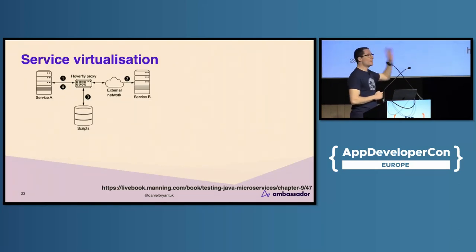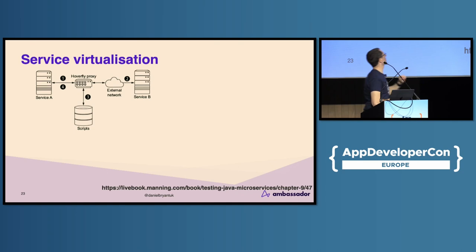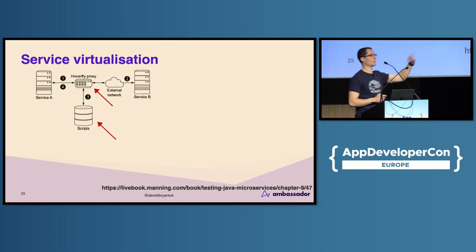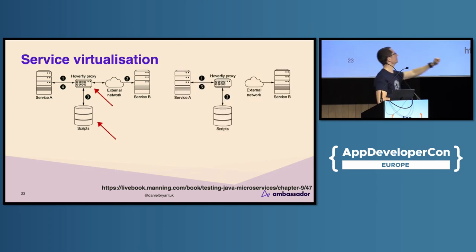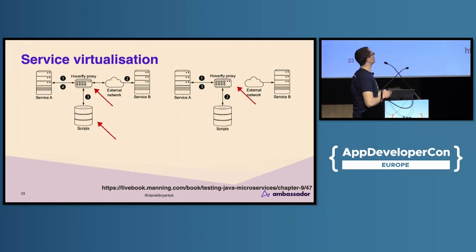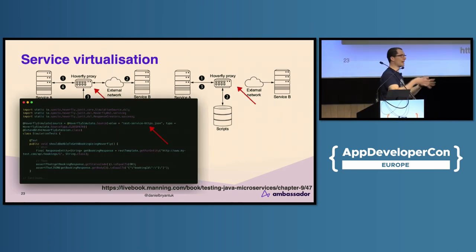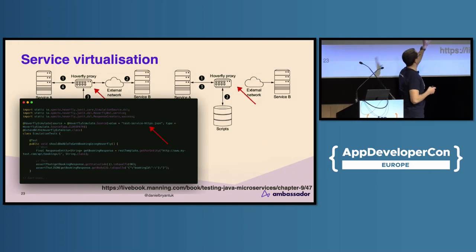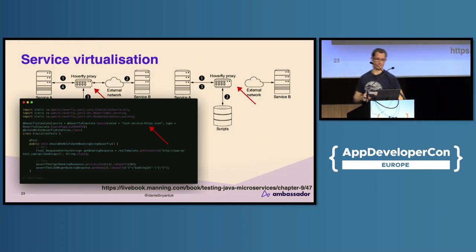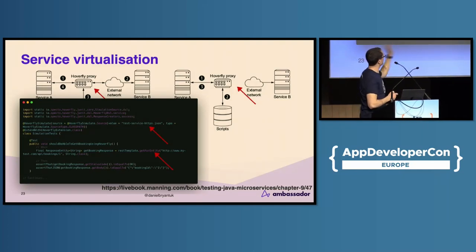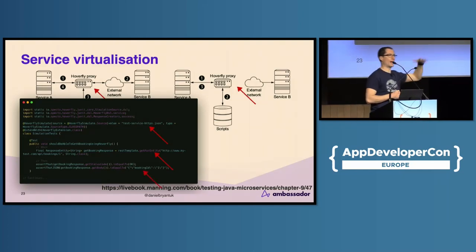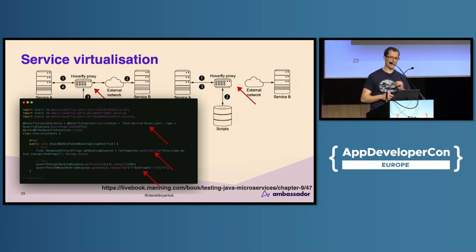The really cool thing with service virtualization is the ability to capture traffic and mess with it. I can put Hoverfly in the middle between Service A and Service B, capture the request and response in a script database, export it as JSON, then remove the network connection and replay any requests I made — running locally or in CI. I can change the data, introduce failures. Some example code: I'm loading in a JSON file containing request-response pairs, making my call over the wire, and asserting values back without having pre-configured it. Really quite powerful.